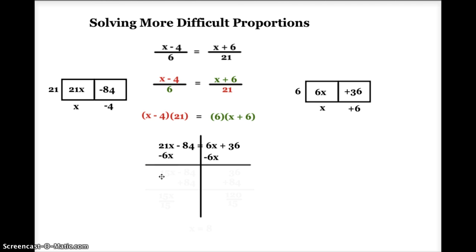After doing that, on the left side of the equation, I'm going to be left with 15x minus 84, and on the right side of the equation, I'm just going to be left with 36.